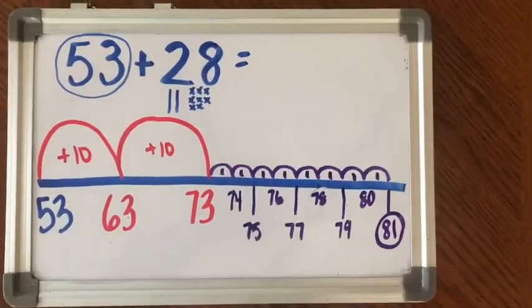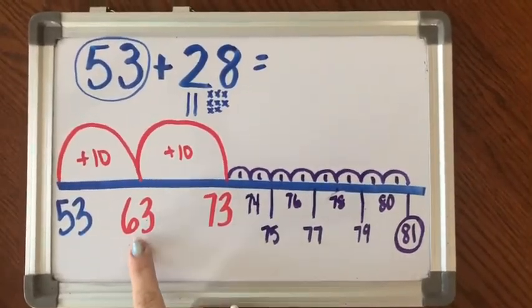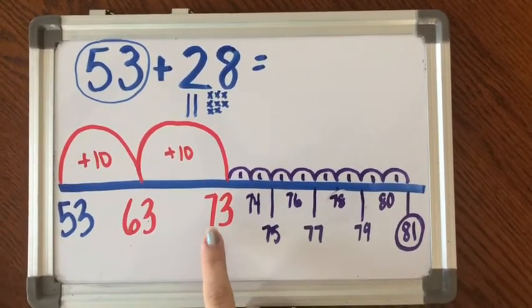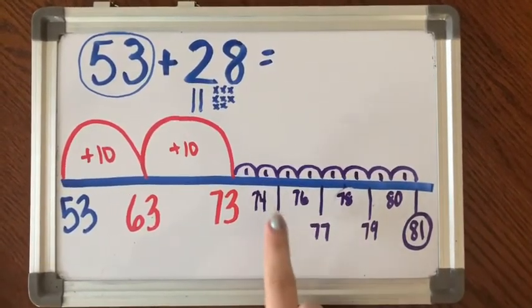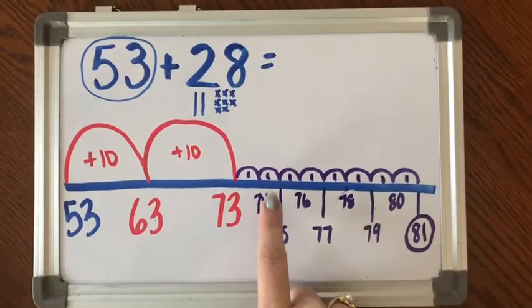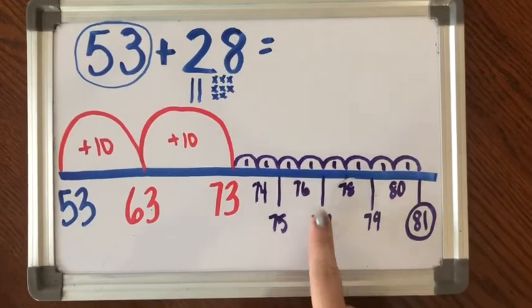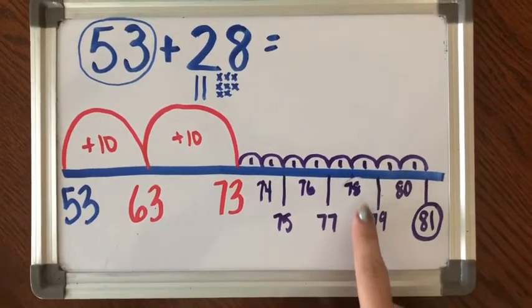Let's do it. All right, so we've got 63, 73. And then when I'm counting my 1s, as you can see, I don't have too much room on my line. So I had to do 74 and then give myself some room. 75, 76, 77, 78, 79,